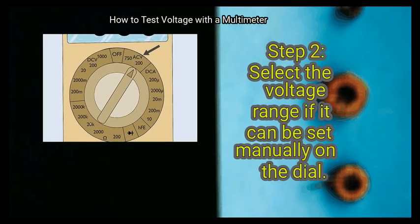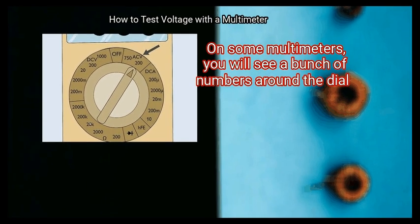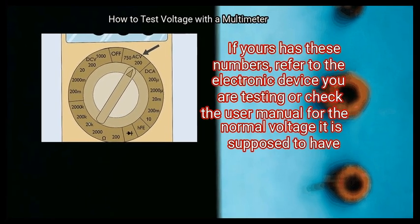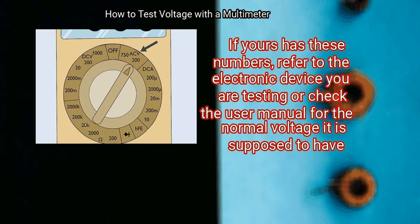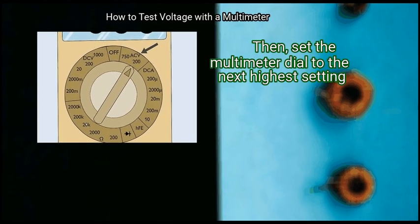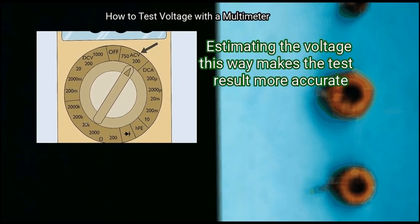Step 2: Select the voltage range if it can be set manually on the dial. On some multimeters, you will see a bunch of numbers around the dial. If yours has these numbers, refer to the electronic device you are testing or check the user manual for the normal voltage it is supposed to have. Then set the multimeter dial to the next highest setting. Estimating the voltage this way makes the test result more accurate.